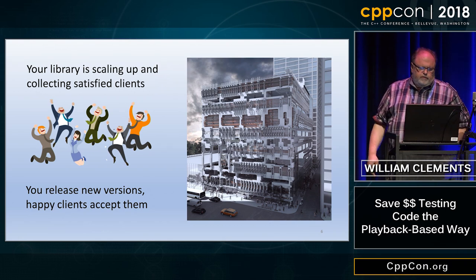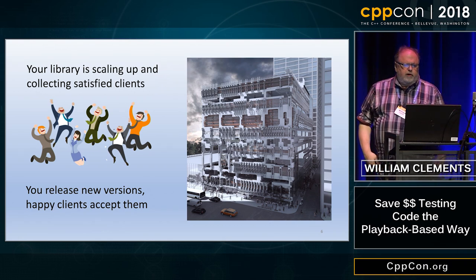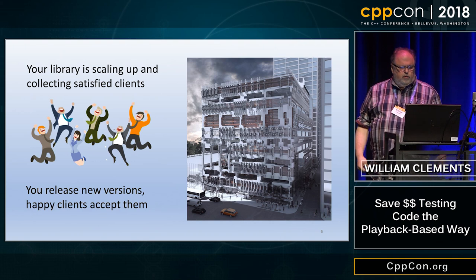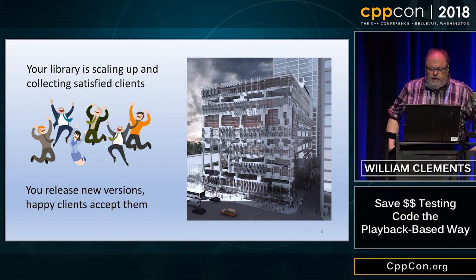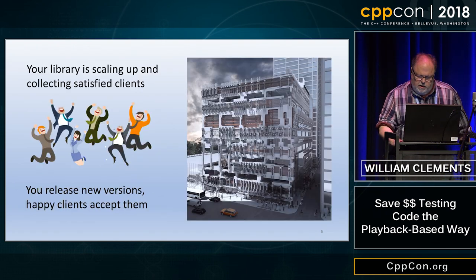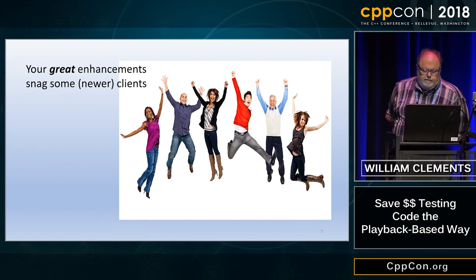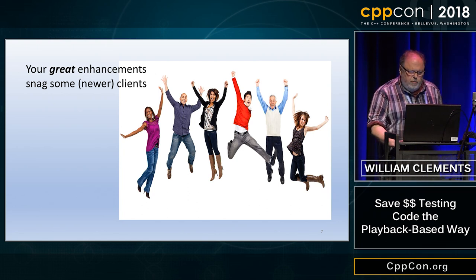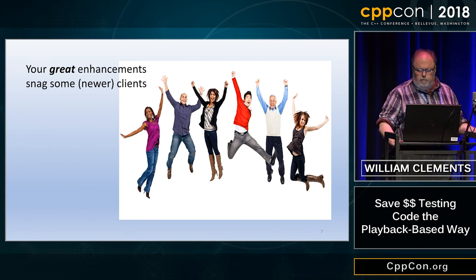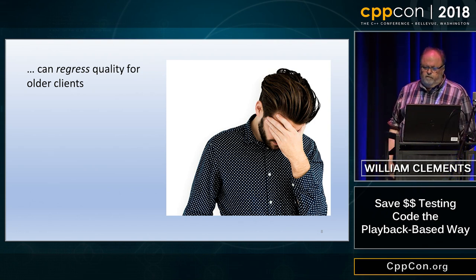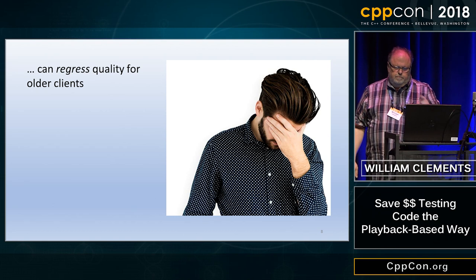This is a happy slide. Your library is nicely scaling up and collecting very happy clients. You keep releasing new versions, they accept them, they trust you. Then you write some more great enhancements and snag even more happy clients. But you put these enhancements out, and everyone's keeping up with your library version. You may regress the quality for somebody who is an already existing client — unhappy client.